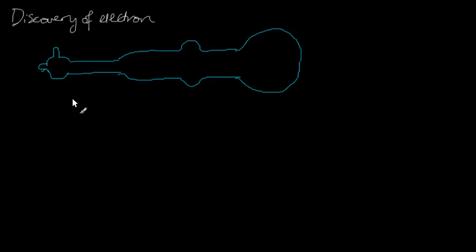In this video, I'm going to talk about the discovery of electrons. This was done in 1897 by Joseph J. Thomson.